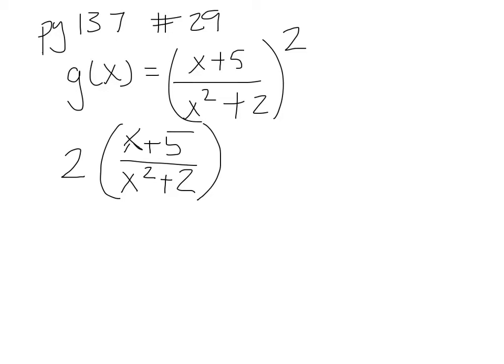The next part, we're going to take the derivative of the inside, and if you can tell, x plus 5 over x squared plus 2 is the quotient rule. And the quotient rule is low d high minus high d low over low squared.